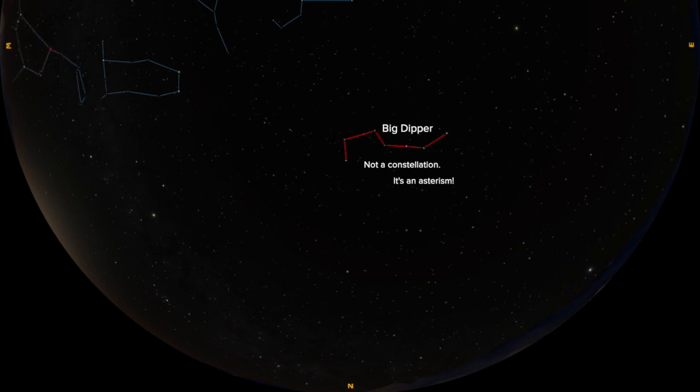It's the Big Dipper. An asterism is an easily recognizable pattern or group of stars that we can use to help us find other things in the sky. We can use the Big Dipper by following the two stars at the end of the bowl down to Polaris, our north star.